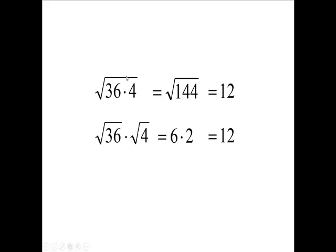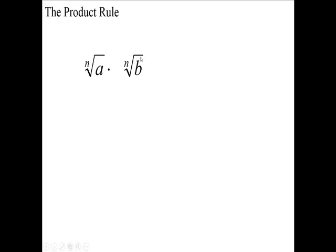So one radical can be written as two radicals, and two radicals can be written as one radical. We have a property here that says two radicals can be written as one radical when you're multiplying, and vice versa, one radical can be written as two.